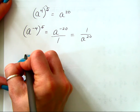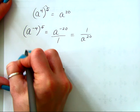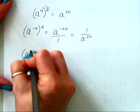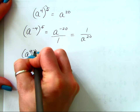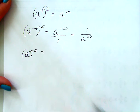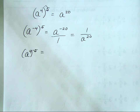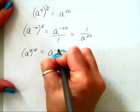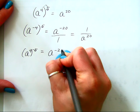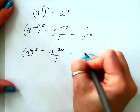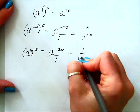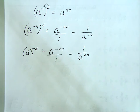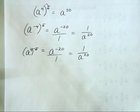Would the same answer be true if the 4 was positive but the 5 was negative? Yes, because you're still getting a to the negative 20th, which is still 1 over a to the positive 20th. So nothing dramatically different so far.